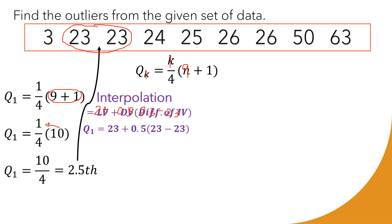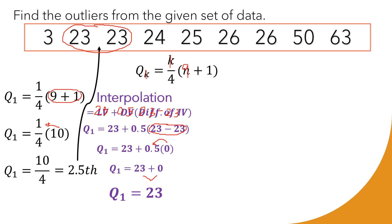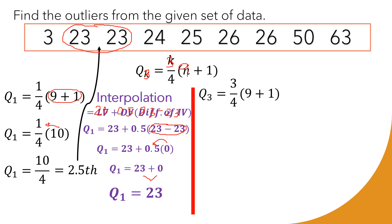Rewriting clearly: Q1 = 23 + 0.5 × (23 − 23) = 23 + 0.5 × 0 = 23 + 0 = 23. Therefore Q1 = 23. Take note: whenever you interpolate between two identical values, you may no longer need to really interpolate — just use those same numbers directly.